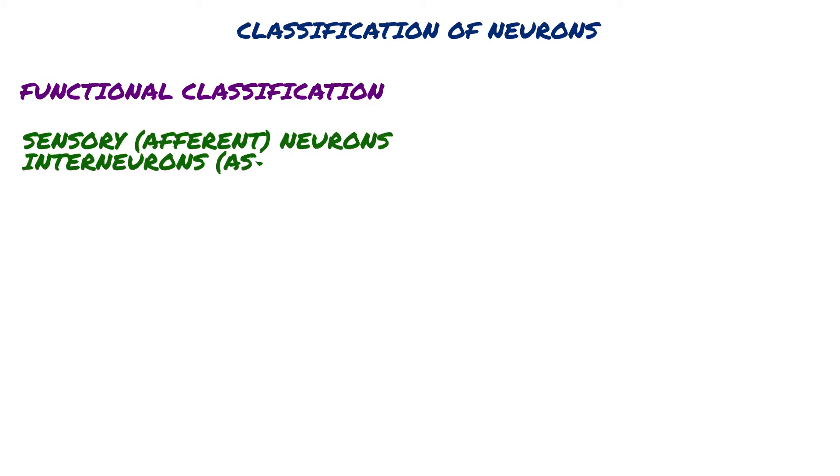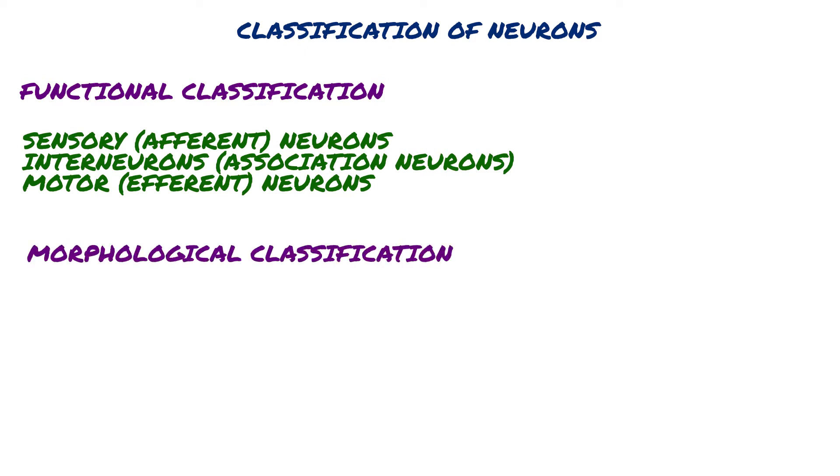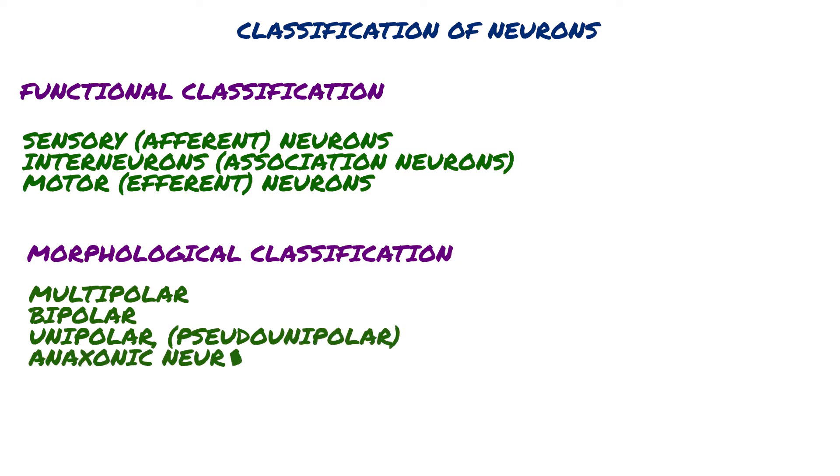Classification of neurons. There are two types of classification: functional and morphological. Functional classification includes sensory (afferent) neurons, interneurons (association neurons), and motor (efferent) neurons. Morphological classification is based on the number of processes and includes multipolar, bipolar, unipolar, pseudounipolar, and anaxonic neurons.